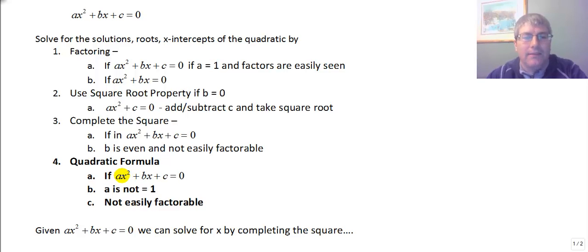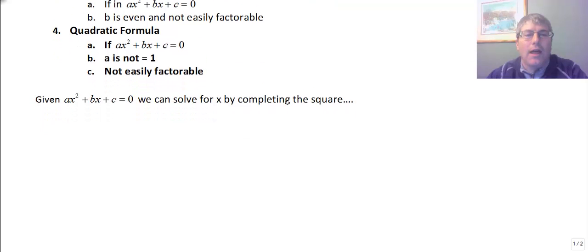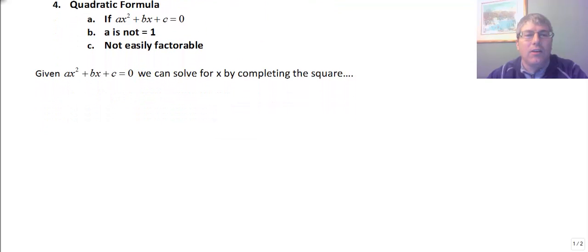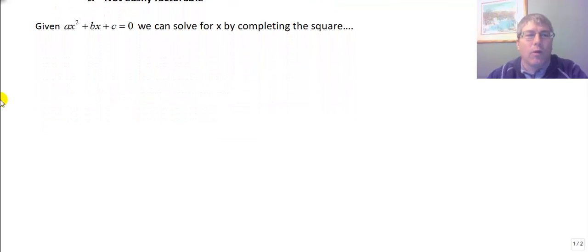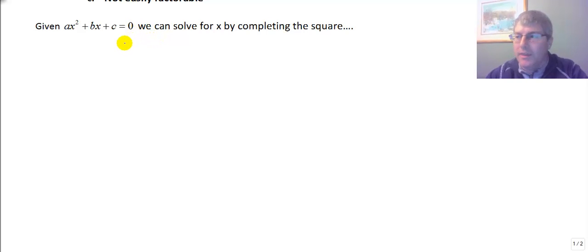The quadratic formula is easiest to use when you have something in standard form, a is not 1, and it's not easily factorable. So let's take a look at a quadratic in standard form: ax squared plus bx plus c equals 0. We want to solve for the x-intercepts — we want to solve for x.